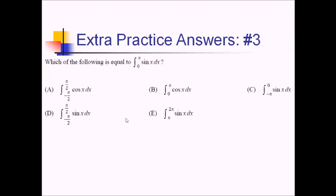On this problem, I want to know which of the following equals the integral from 0 to π of sine of x. There's a clever way: if you remember that the area between 0 and π on sine — the positive first half of the wave — is the same as the area under cosine between negative π/2 and π/2, then you could immediately pick choice A. This was a no-calculator question, so you really needed to remember what sine looks like.